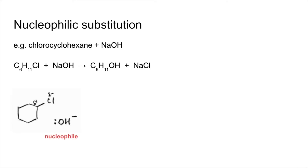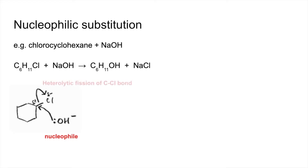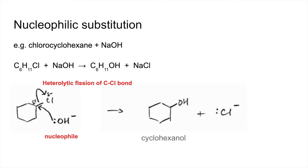Because OH⁻ ions are nucleophiles, they will donate a pair of electrons to that slightly positive carbon, and that's going to repel the pair of electrons in the carbon-halogen bond completely onto the halogen and break the bond by heterolytic fission. That's going to produce the products: cyclohexanol and a chloride ion.